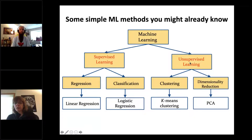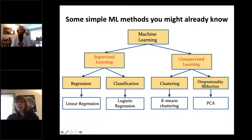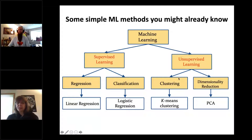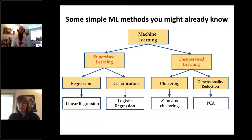Unsupervised learning — on the right-hand side of the diagram — is exemplified by dimensionality reduction. PCA and EOFs are classic examples of dimensionality reduction where you don't have input-output pairs; you're doing machine learning without having a correct answer. Another example is clustering, like k-means clustering, where you try to group samples into similar groups.